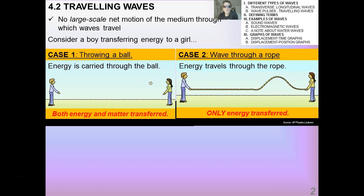The main difference between these two cases is that here with the ball, both energy and matter are transferred, and with the rope, only energy is transferred. The actual rope is not transferred.